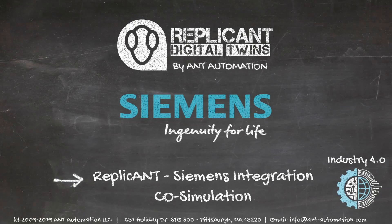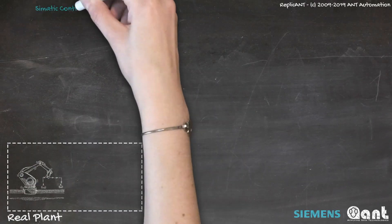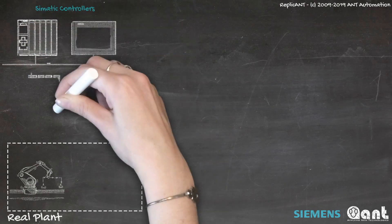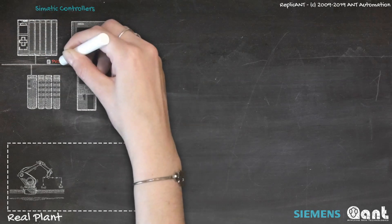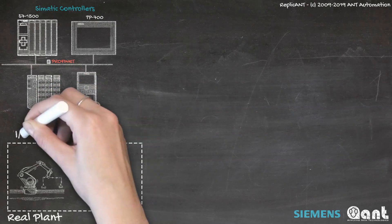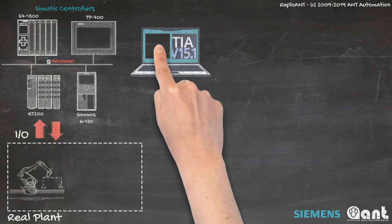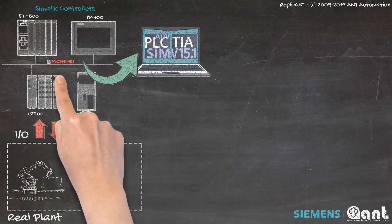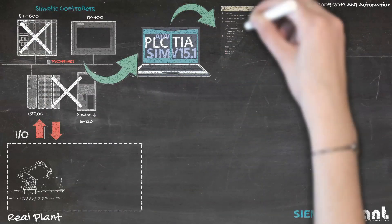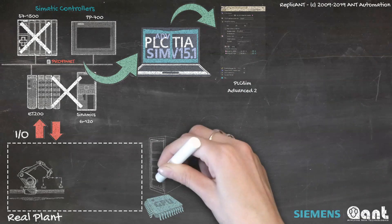In the new era of industrial digitalization, at Ant Automation, we offer seamless integration with Siemens product simulation platforms. If you use SIMATIC controllers, such as S7-1500, with local and remote I/O modules, drives, HMI panels, and more, now you can produce your digital twin using PLC SimAdvanced and Siemens Runtime Manager.